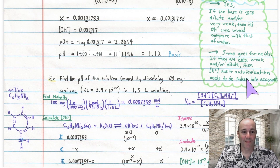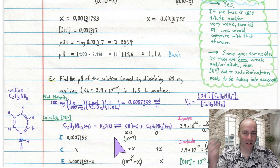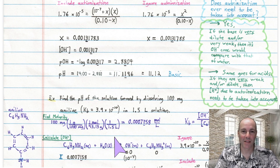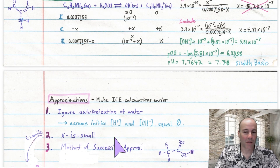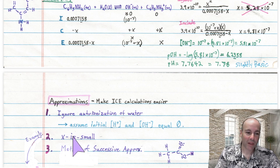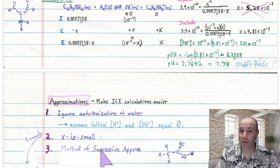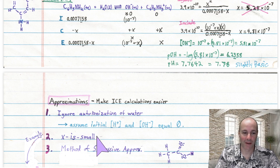In our next video we'll discuss a couple of other approximation techniques. This time we covered autoionization of water — ignoring it and justifying that choice. Next time we'll discuss the 'x is small' approximation and the method of successive approximations. These should help you solve problems faster. Stay tuned for that.